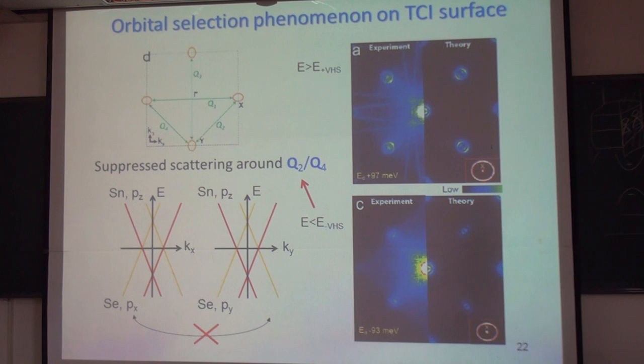However, when the constant energy is below the Dirac point, they have different orbital character, px, py. But with usual spherical type, non-magnetic impurity, it's very difficult to scatter from px to py orbital. So that's why when your energy is below the Dirac point, you get this suppressed signal. But above the Dirac point, you can have stronger signal. So this asymmetry phenomena strongly indicates the orbital texture of this surface state.